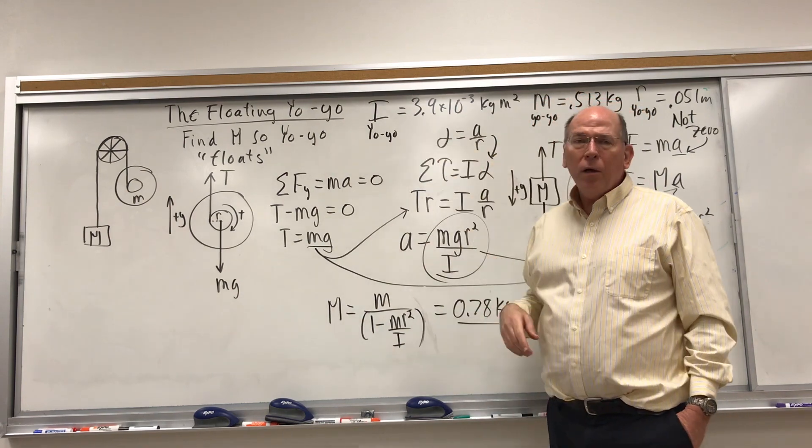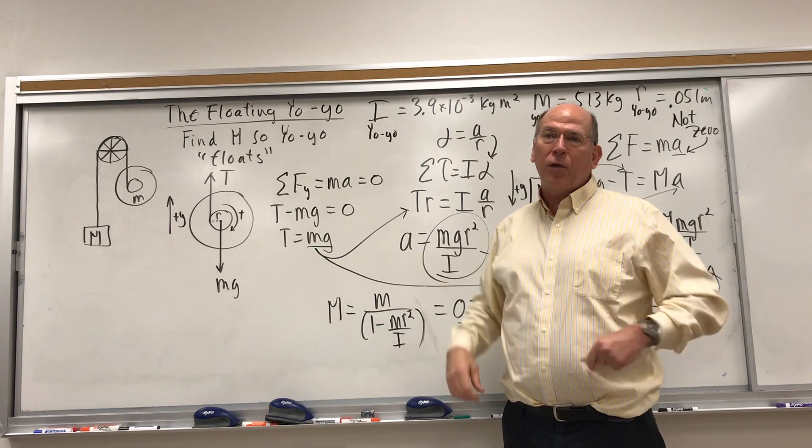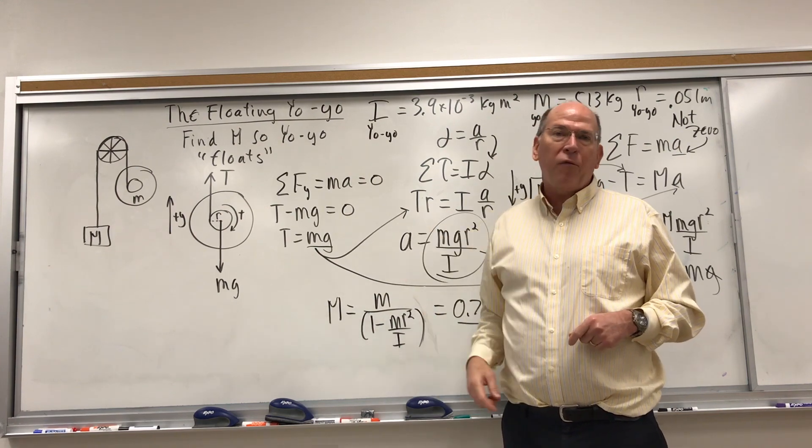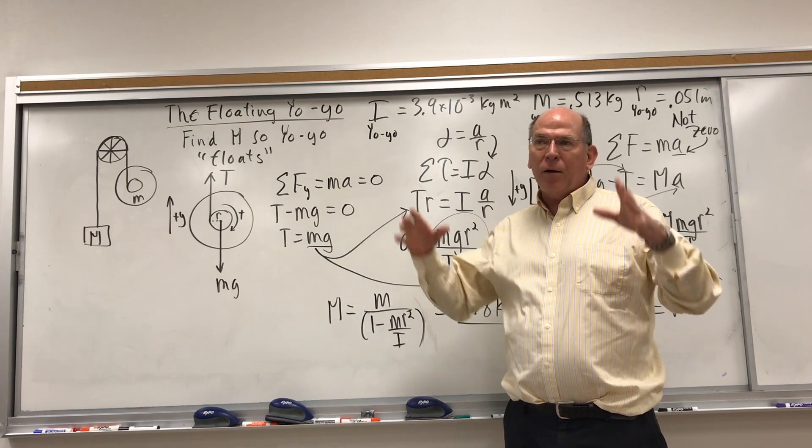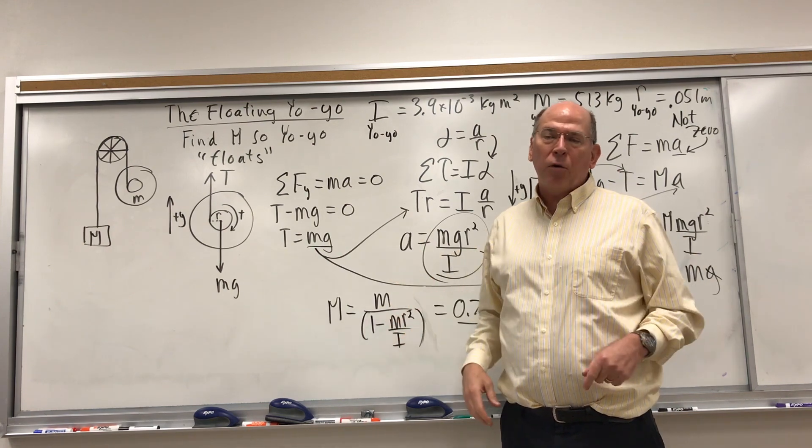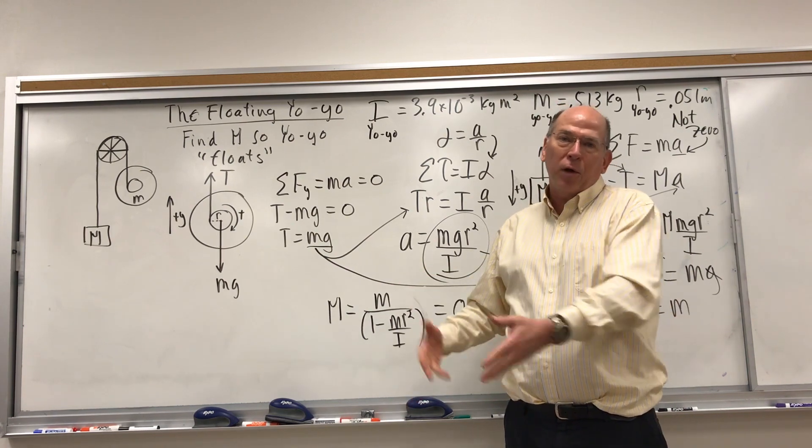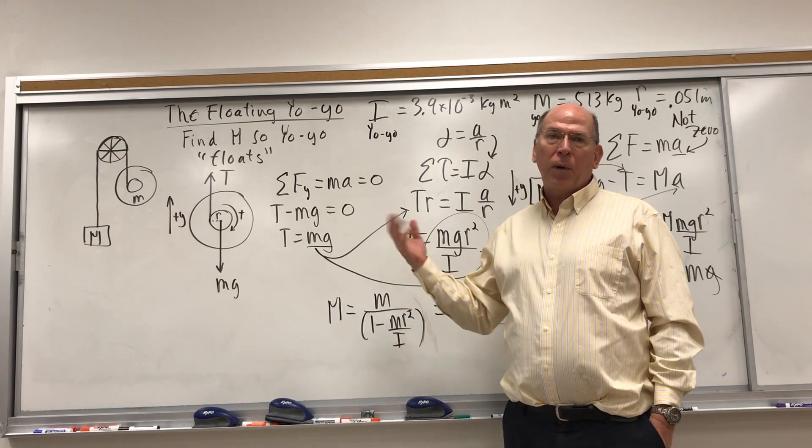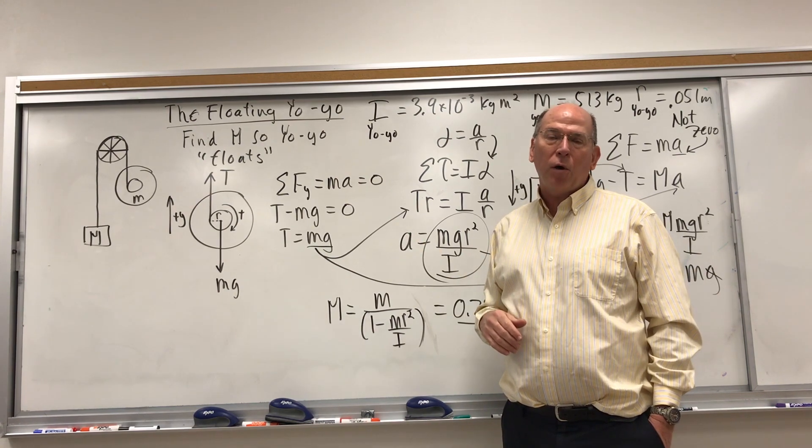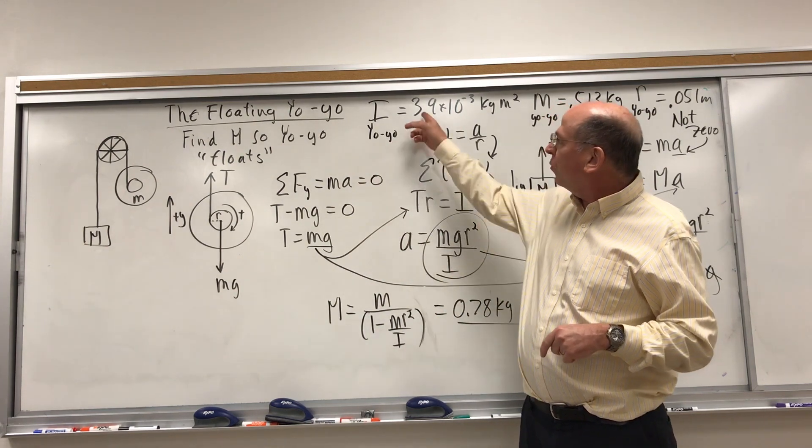We know some things about the yo-yo. We know its rotational inertia. I figured that out by putting it on top of a rotating disk that was spun by a falling mass. This is a lab we do in my class. I calculated the rotational inertia of the disk yo-yo combination and then I did it without the yo-yo and got the difference.